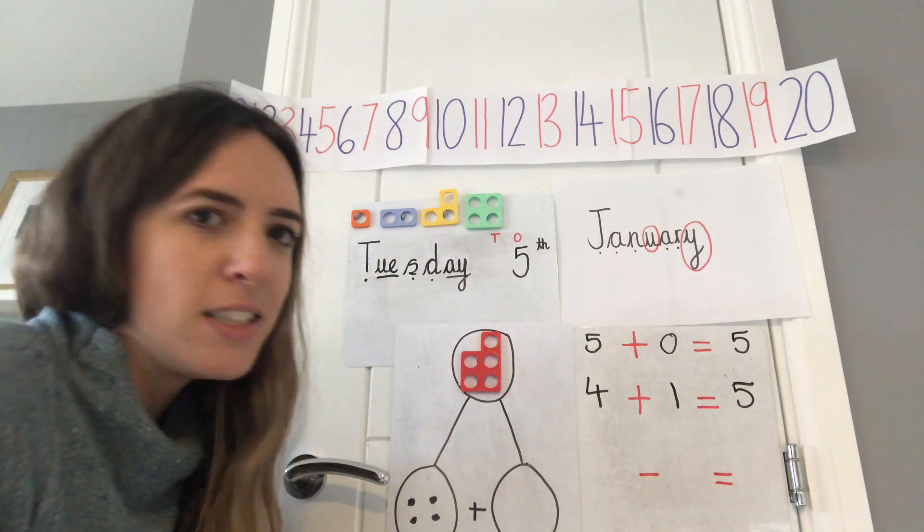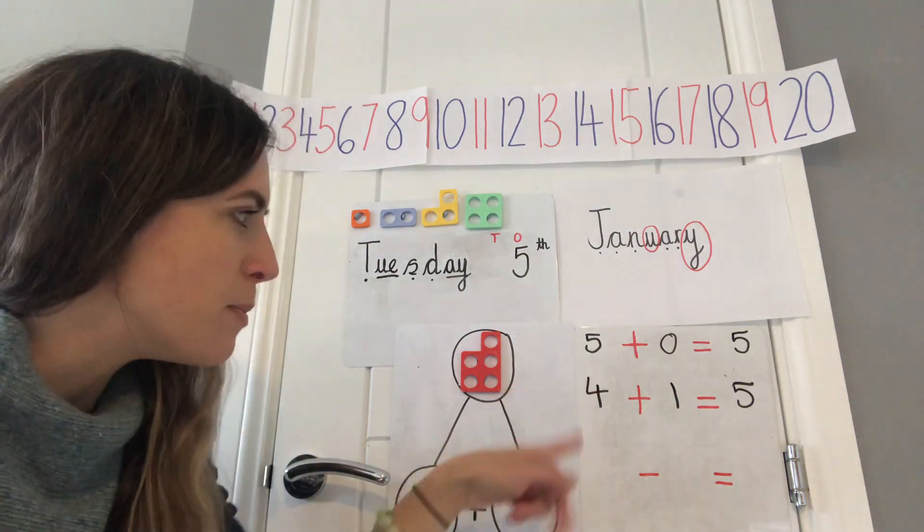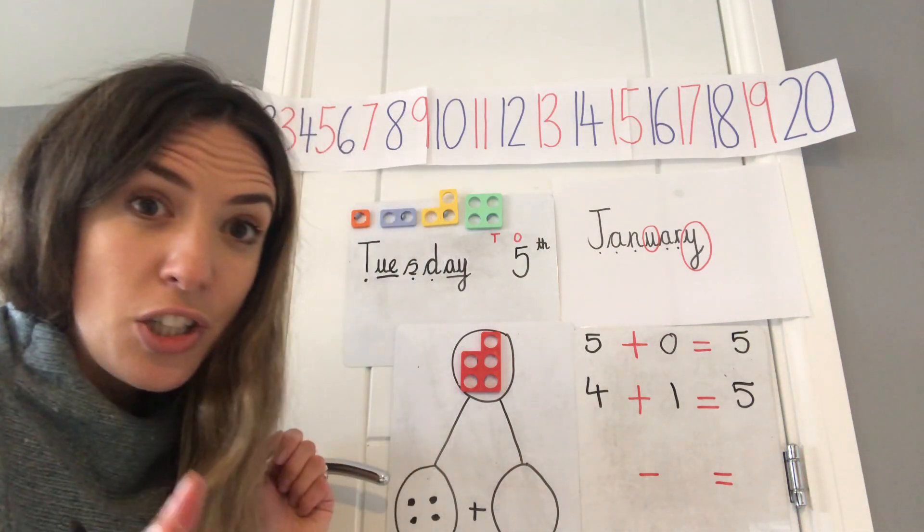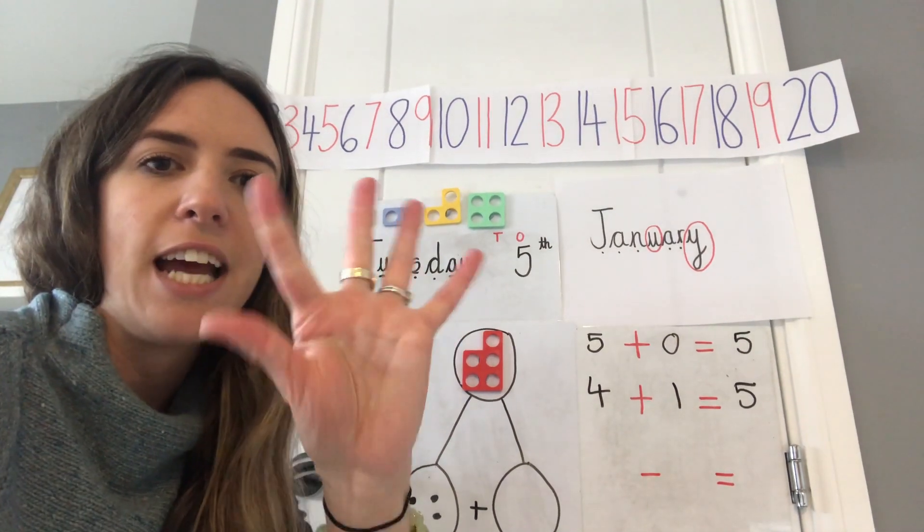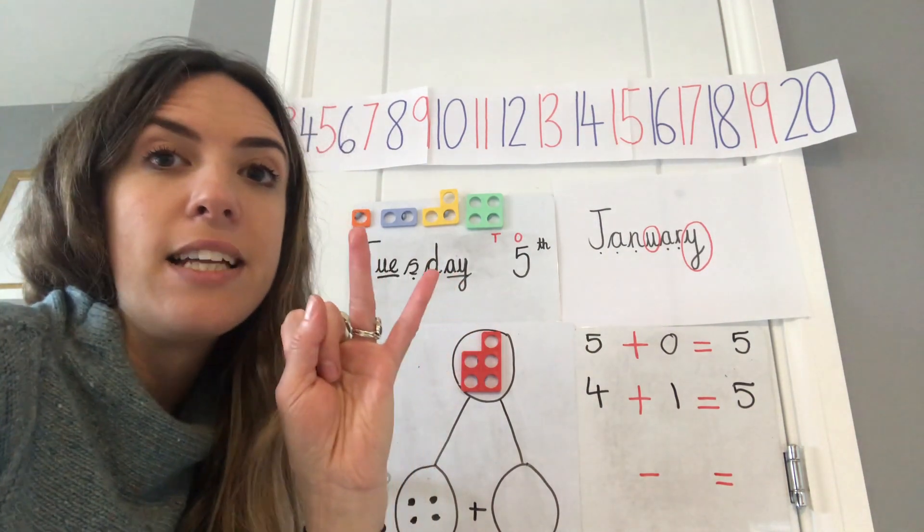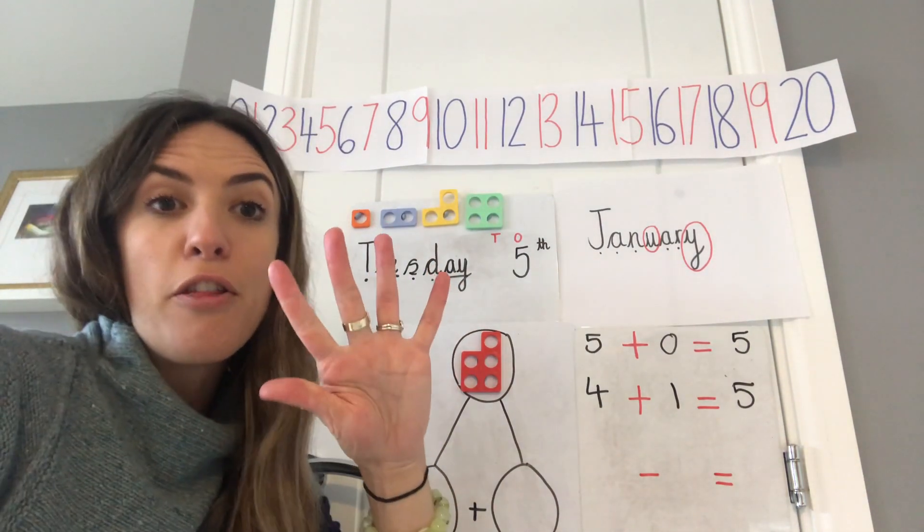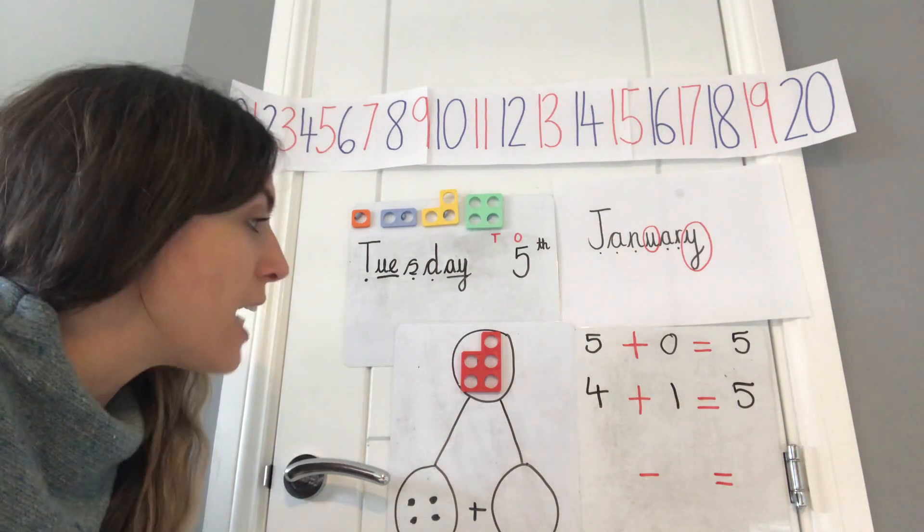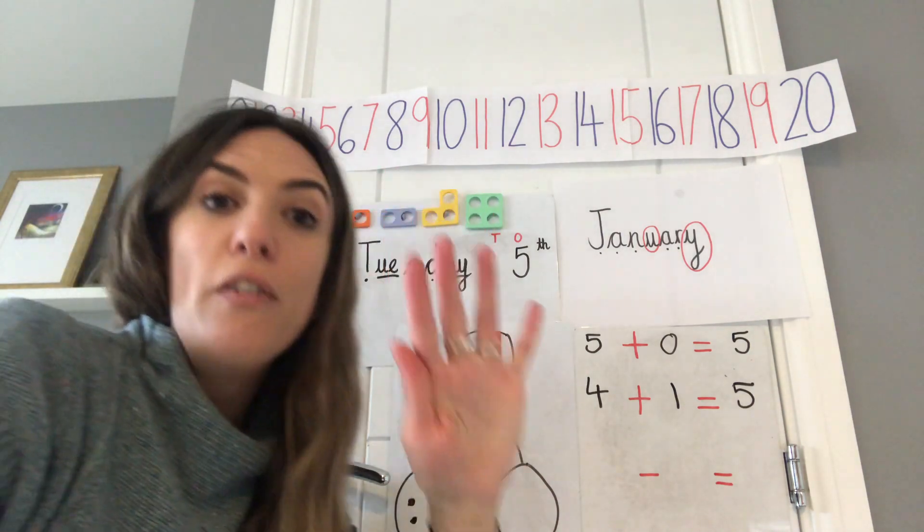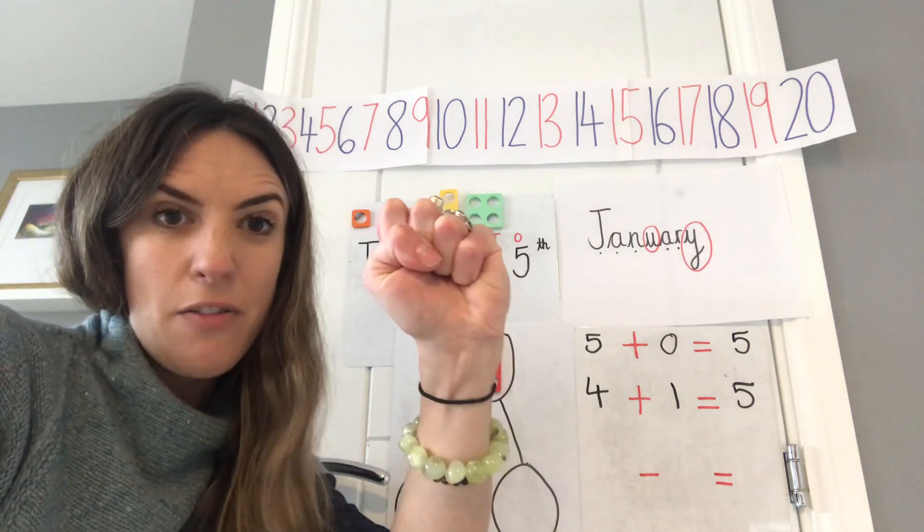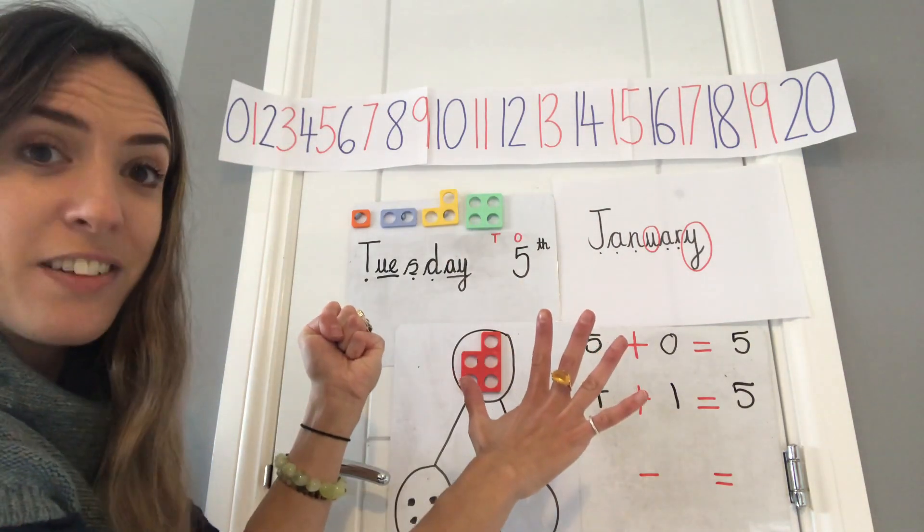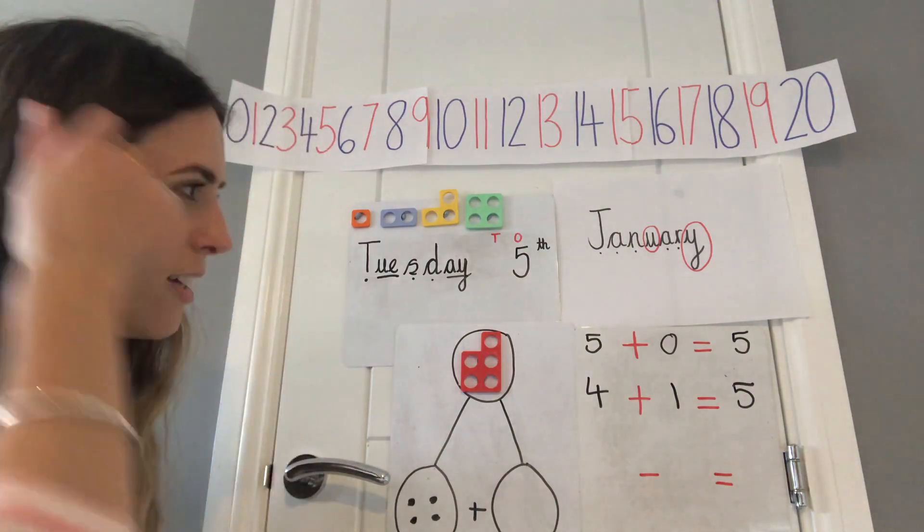Five add one. Can you think of lots of other ways? You could have, there's a bit of a pattern coming, isn't there? You could have three add two. Super makes five. We could do it on our fingers. Three and two more makes five. We could have two and how many more? Three more makes five. Super. We could have one and how many more makes five? Two, three, four. Four more makes five. You could have zero. Add how many more makes five? Zero add five makes five. Super. Well done.